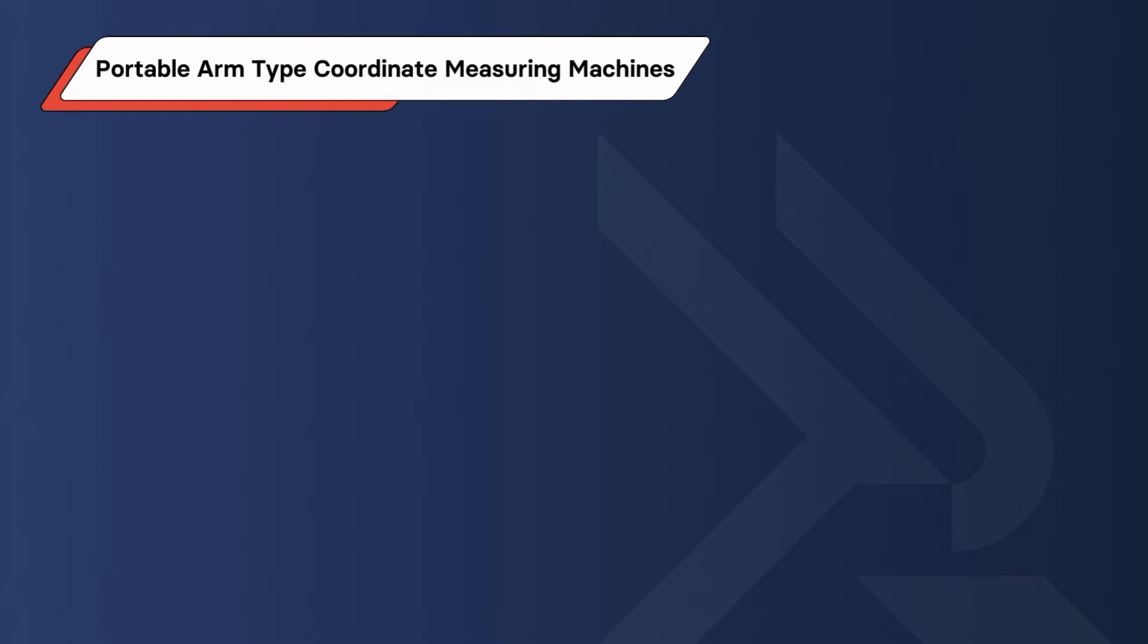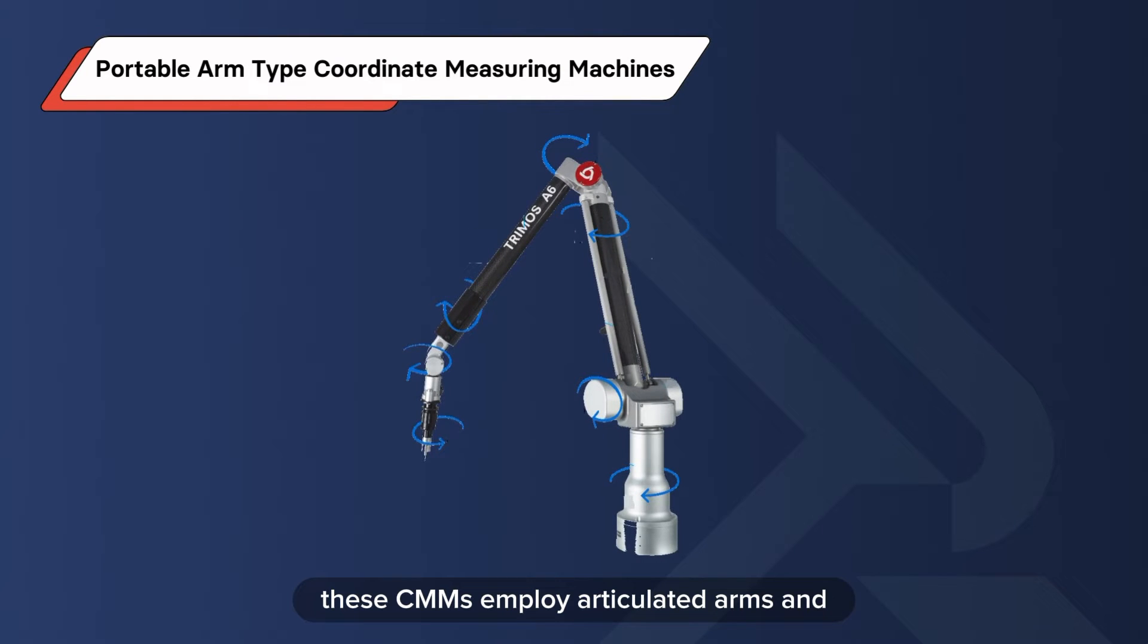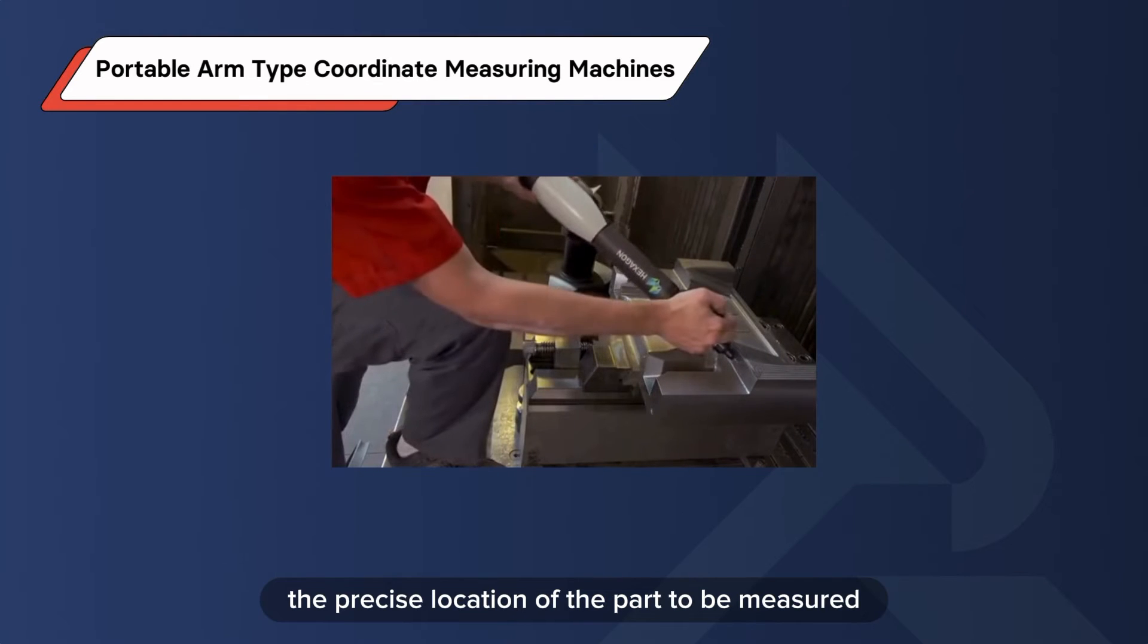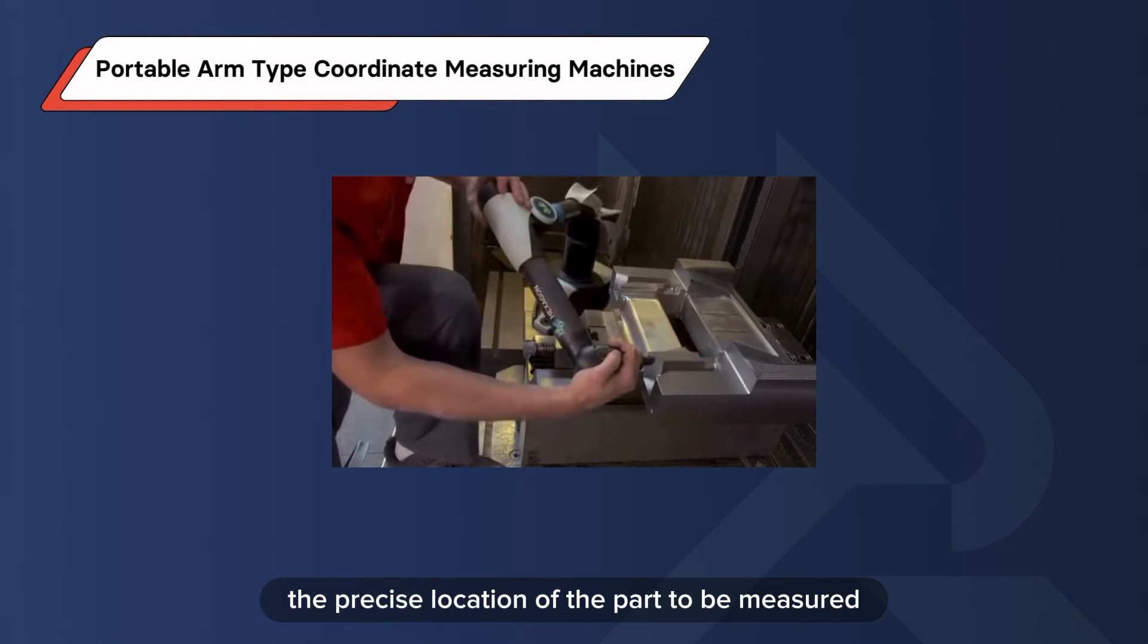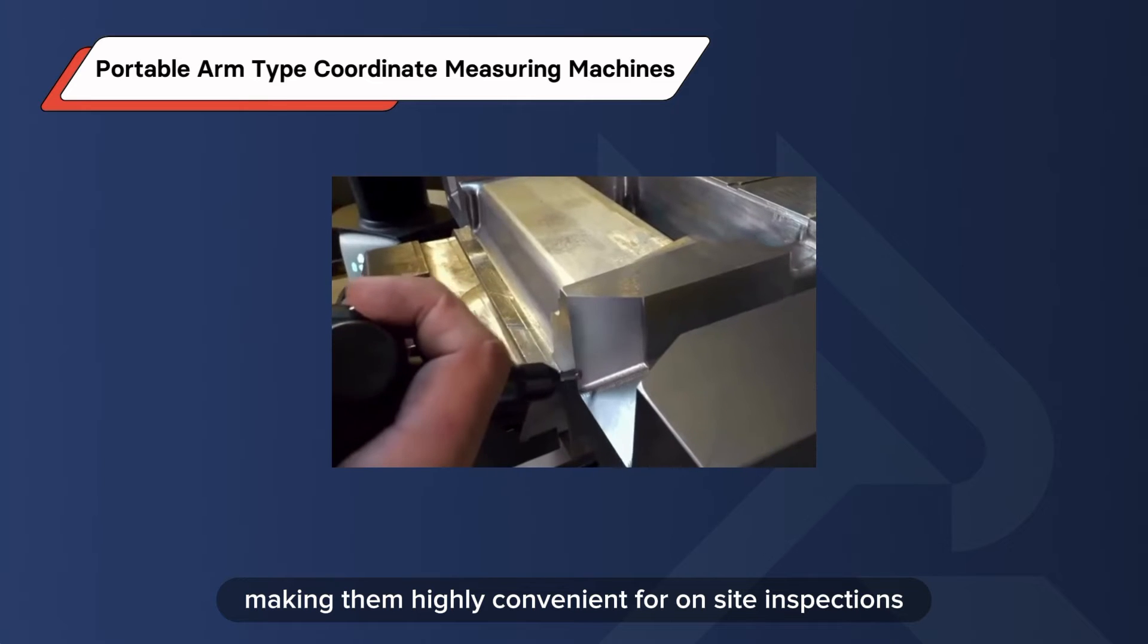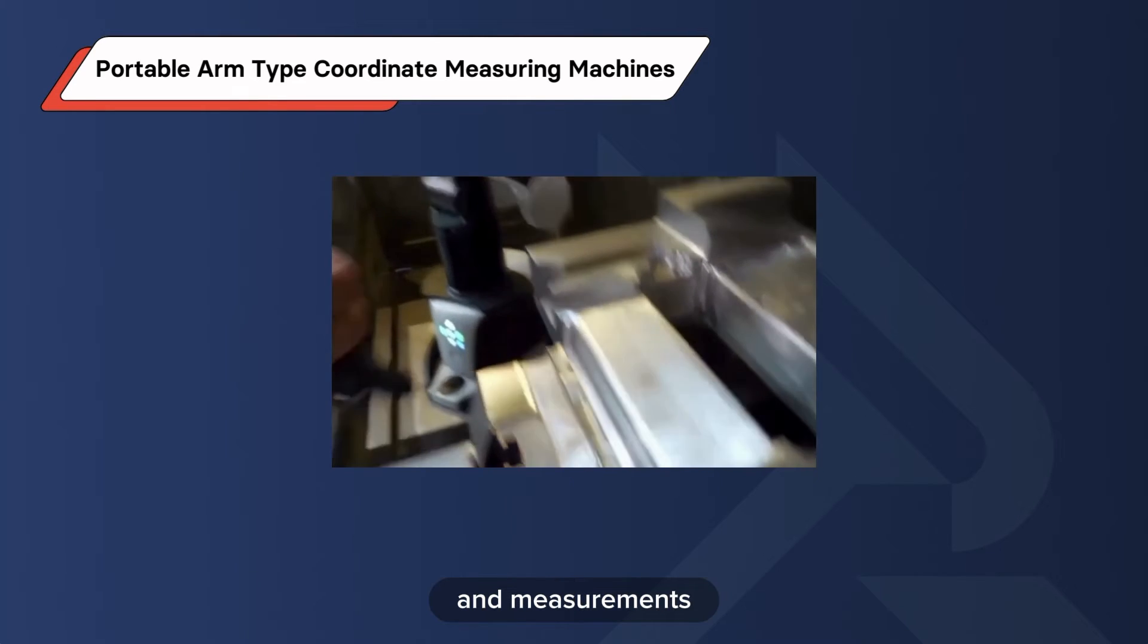Portable Arm Type Coordinate Measuring Machines. These CMMs employ articulated arms and calculate coordinates through rotary positioning, granting them greater versatility. They can be relocated to the precise location of the part to be measured, making them highly convenient for on-site inspections and measurements.